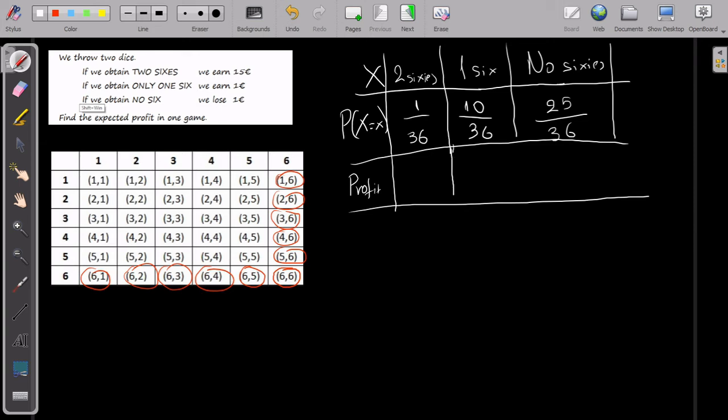So, if I bring two sixes, I earn fifteen euros. If I bring one, I earn one euro. And no sixes, I lose one euro. Since I lose, it will be minus.